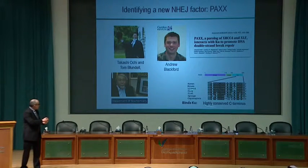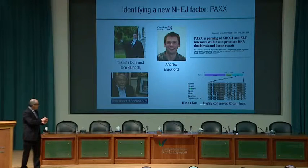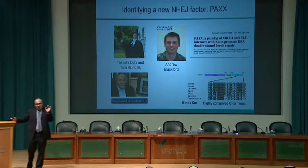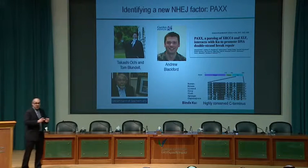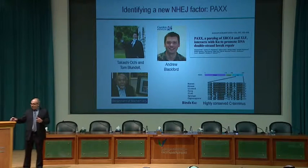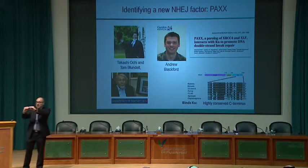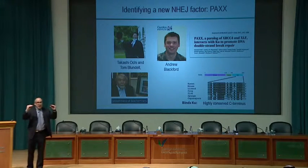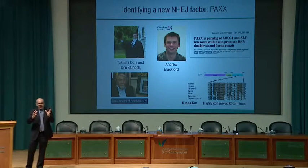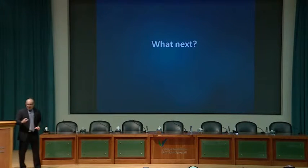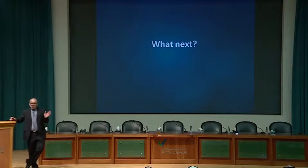PAXX works through a conserved C-terminal motif that binds to Ku. We started the NHEJ story by identifying Ku, and we believe PAXX is the last factor, completing the circle. One Ku binds to one double strand break end, another Ku binds the other end, and PAXX bridges those two DNA ends through binding to Ku, holding them together so XRCC4, Ligase 4, and DNA-PK can process and re-join the ends.